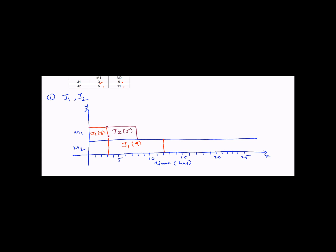Though job J2 is done with machine M1, it cannot proceed to machine M2 immediately because J1 is still being processed on M2. After J1 is completed on M2 at the 12th hour, we can schedule J2 on M2, which takes another 11 hours — from hour 12 to hour 23. So the processing of both J1 and J2 will be done by the 23rd hour, and M2 is idle for the first 3 hours.